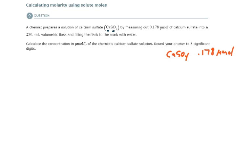We are also given a volume of the solution. The volume of the solution is 250 milliliters. So both of our initial measured values have three significant digits, which is why our answer needs to be rounded to three significant digits.